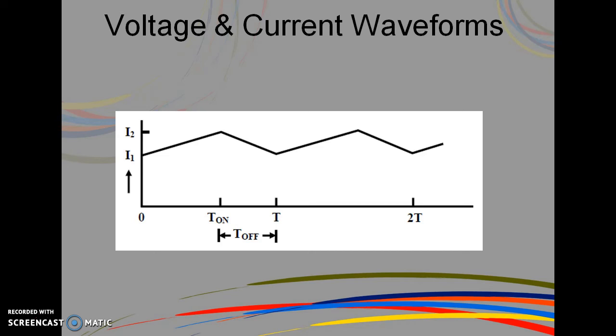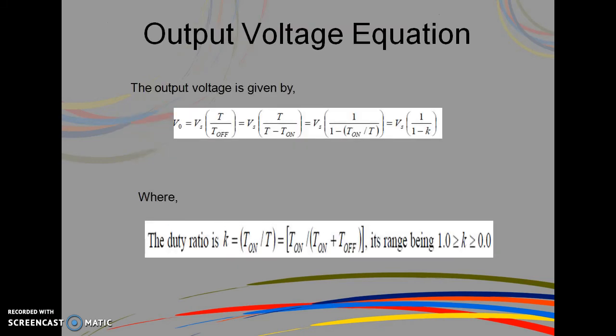Similarly, the current varies linearly from I2 to I1 during the time interval T_off. Using the expression I2 - I1 = I_max - I_min = (Vo - Vs)/L × T_off, while equating these equations we get Vo = Vs × 1/(1-K). The average value of the output equation is given as Vo = Vs × T/T_off, which can be written as Vs × 1/(1-K), where K is the duty ratio which varies between 0 to 1, and it equals T_on/T.